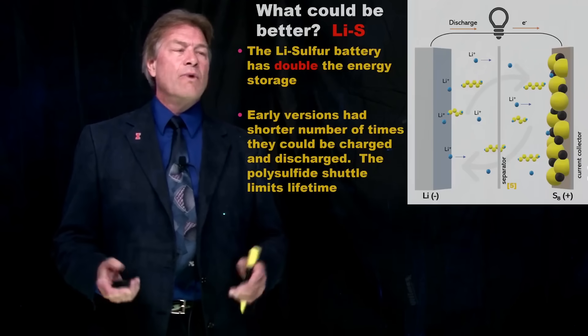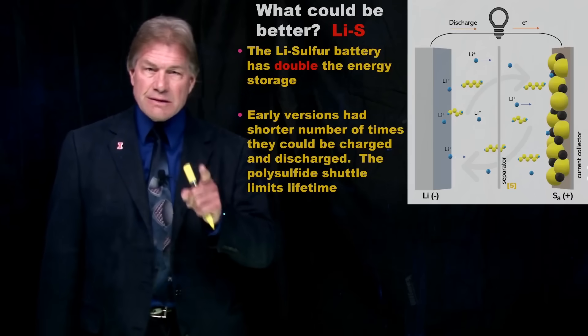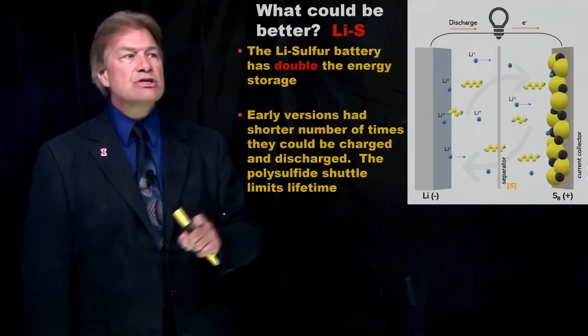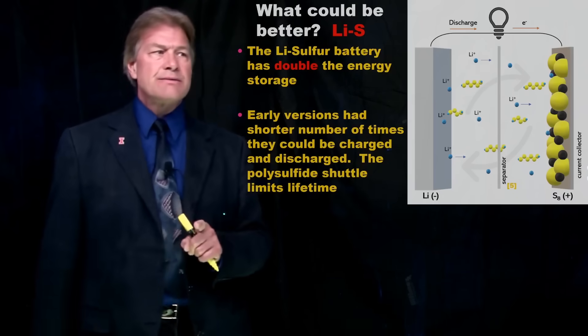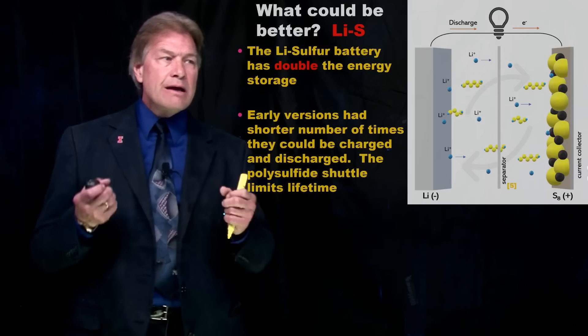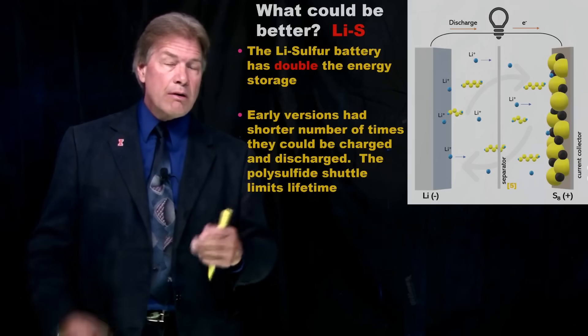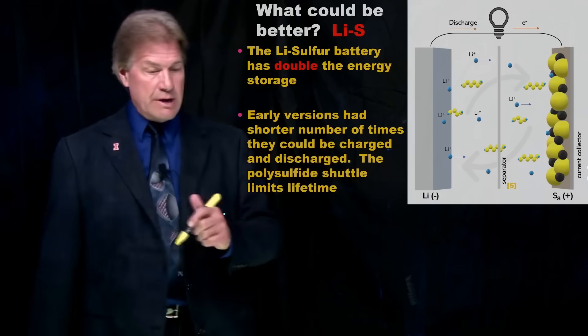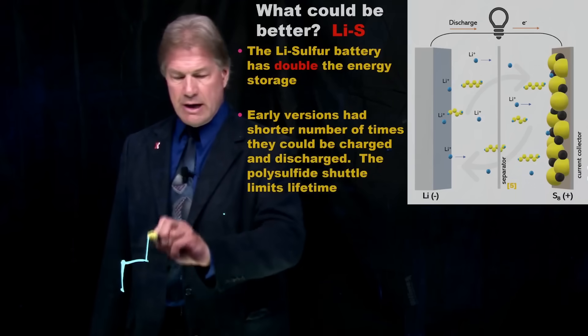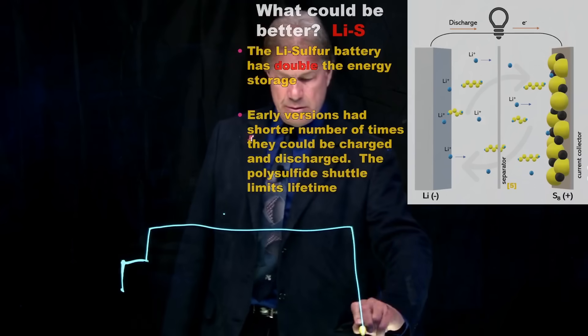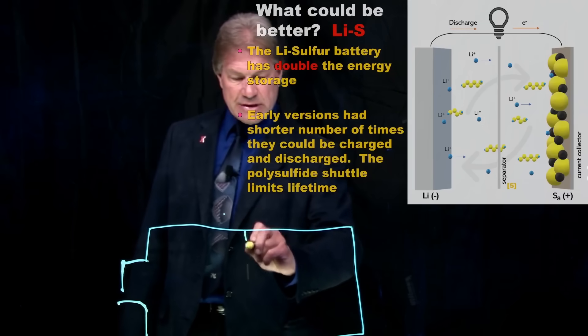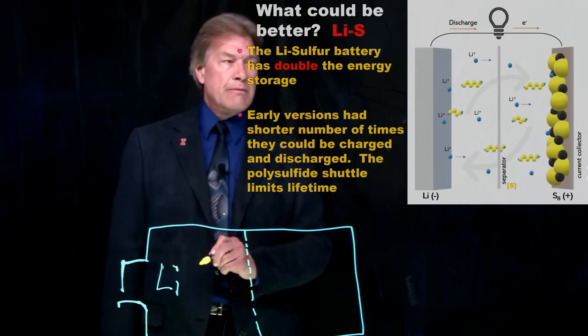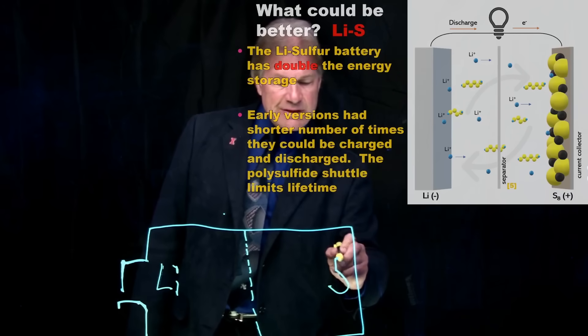But, what could be better? Well, there is a type of lithium ion battery that could be better. And that's the lithium sulfur battery. Lithium S. And it potentially has double or even more energy storage. So you might say, this is wonderful. Let's use it. And what would it look like? Well, we still have a battery here. And we still have a separator. And on this side, we just have lithium. And on this side, we just have sulfur.